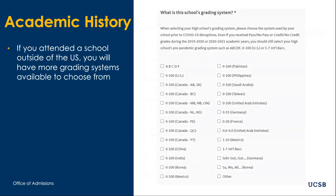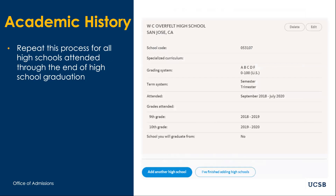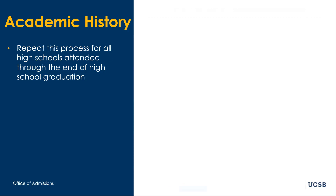If you are entering a school located outside of the US, you will have more options available to select from as far as grading scales. If you attended more than one high school, you will need to repeat this process for each high school that you have attended through the end of your high school graduation by clicking add another high school.